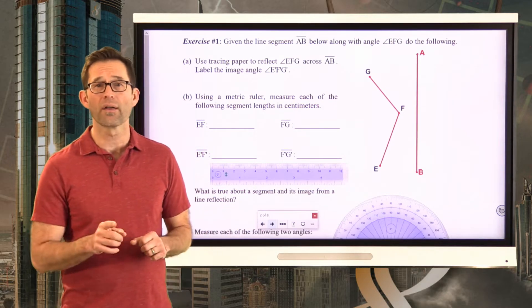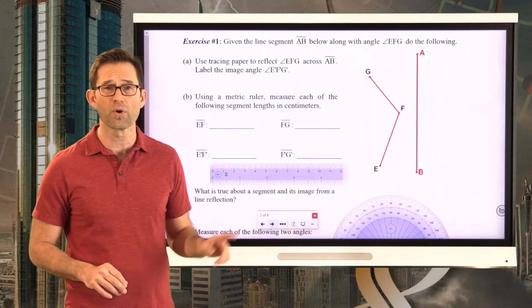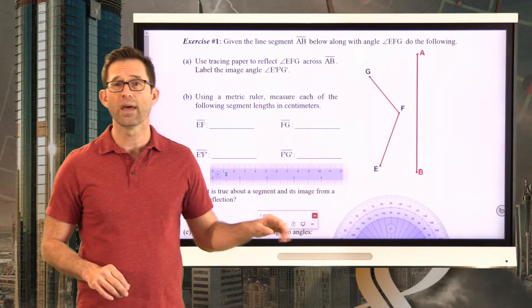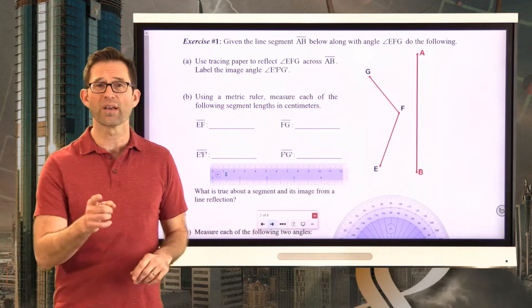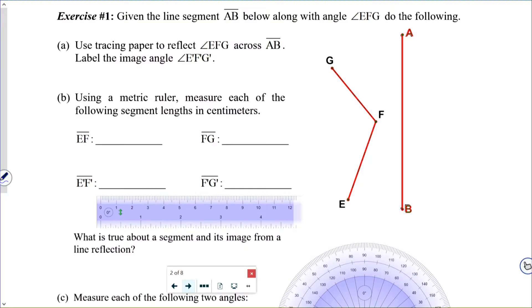For this exercise you're going to need tracing paper, a straight edge, and a protractor to measure angles. Exercise number one: given line segment AB and angle EFG, use tracing paper to reflect angle EFG across AB. Label the image angle E prime, F prime, G prime.